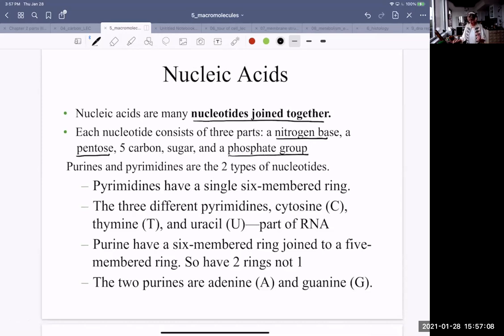There's two different kinds of nucleotides. They're known as purines and pyrimidines. Pyrimidines have a single six-membered ring. The three different pyrimidines are cytosine, we always indicate that with a capital C, thymine, a capital T, uracil, a capital U, which is only part of RNA. Purines have a six-membered ring joined to a five-membered ring. So there's two rings, not one. They're double. The only way I can remember that is that purine has a U in it and double has a U in it. So that's one way to remember that the purines are double rings. The two purines are adenine and guanine.